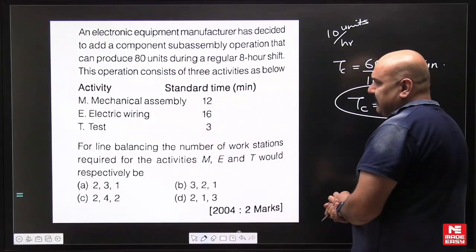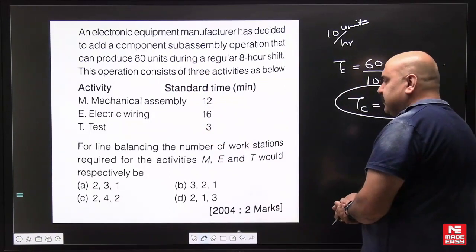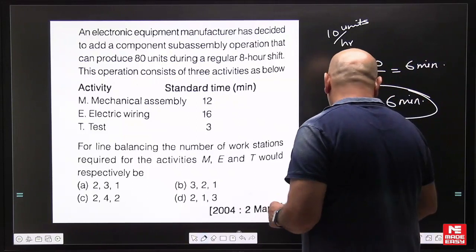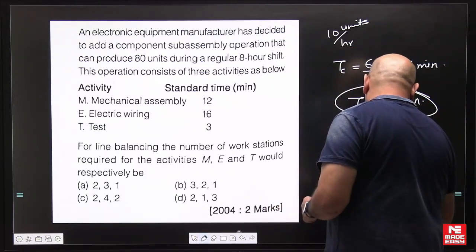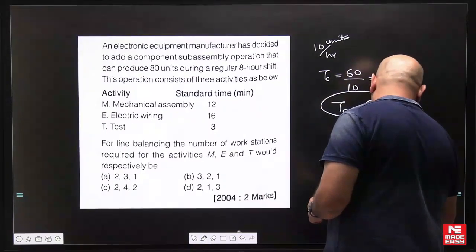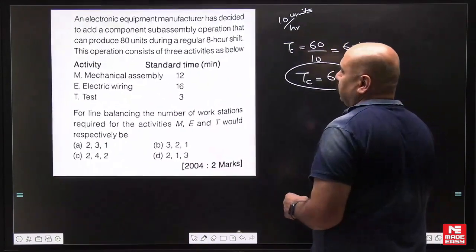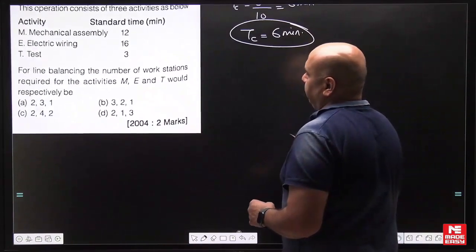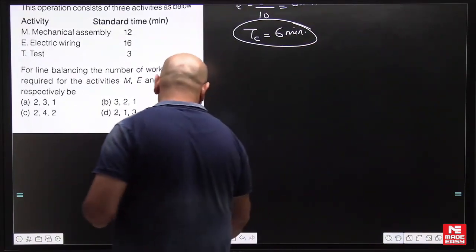The options are given: Mechanical assembly 12 minutes, Electric wiring 16, and Test 3 minutes. In these types of questions, the best approach is we should go with the options available. We should go from the question point of view. No need to solve them directly because we have to select out of these options only.